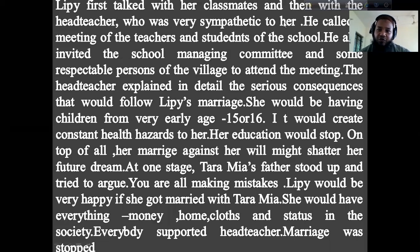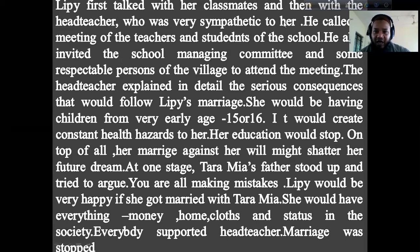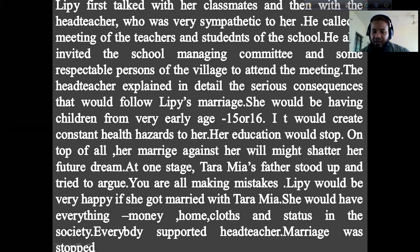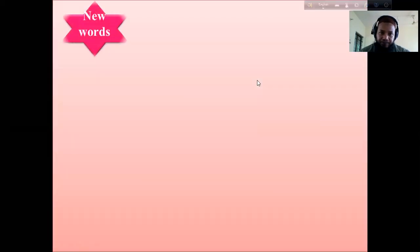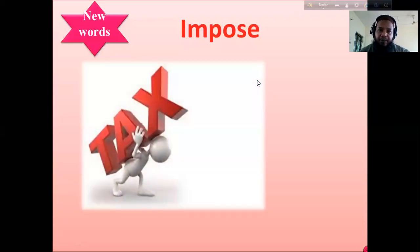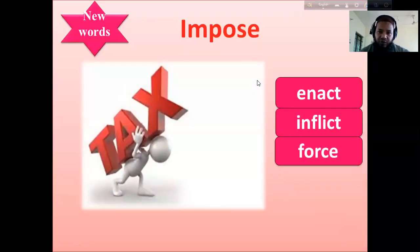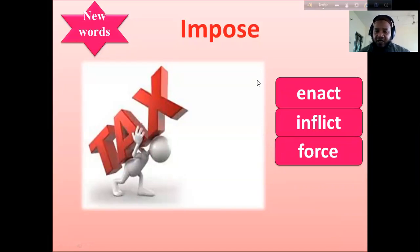This is the story of Lippy. These kinds of early marriage — child marriage — is very common in our country, especially in rural areas and villages. Now the book has some important vocabulary words. The first word is 'impose.'